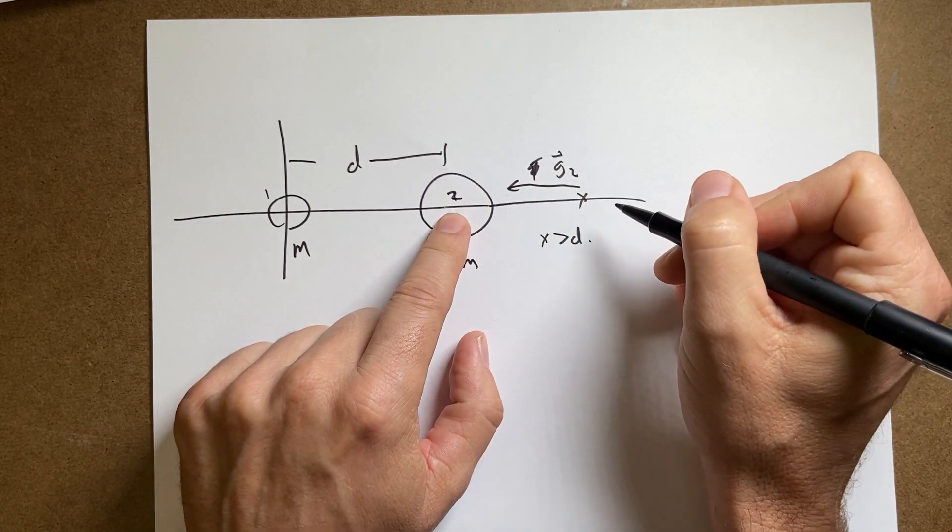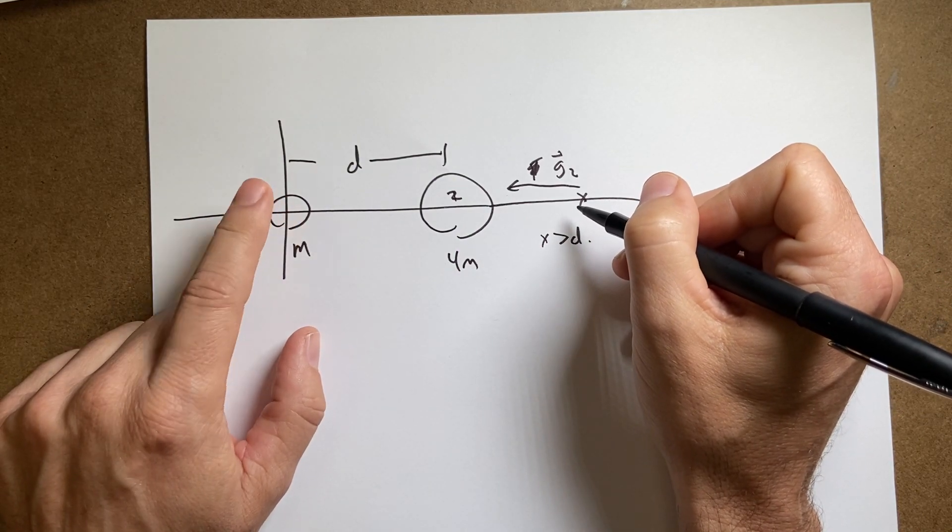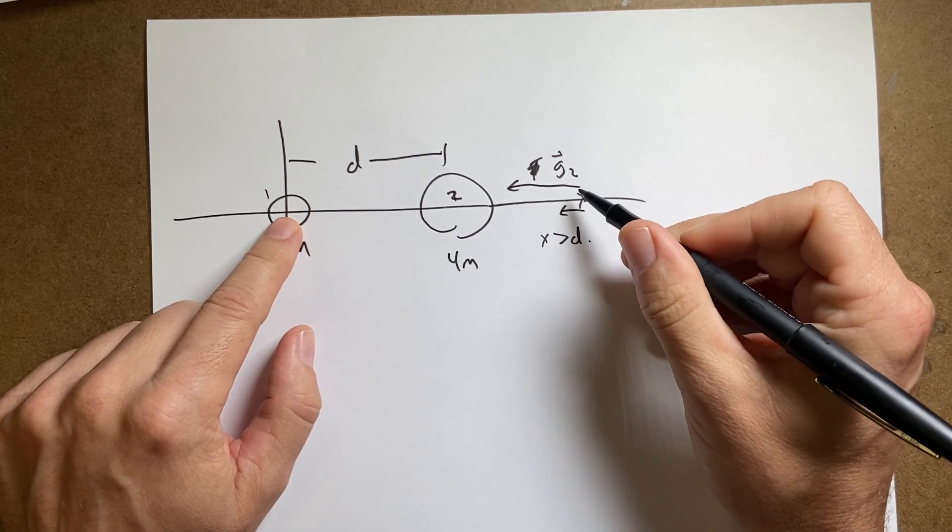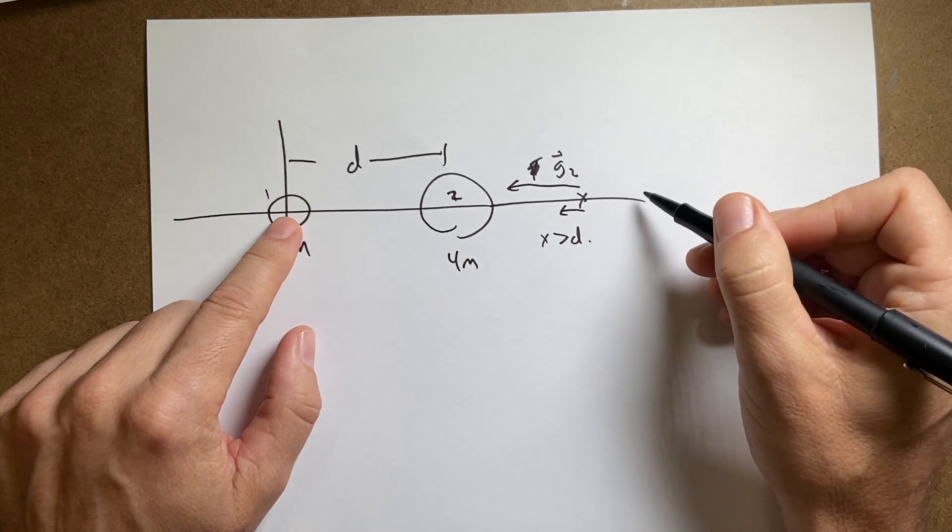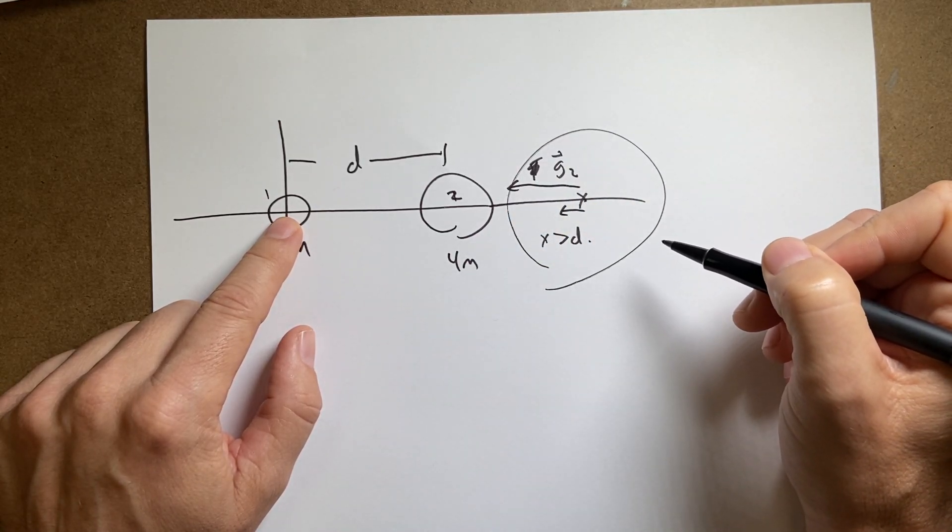That's the gravitational field. Now what about this one? This one's also going to pull to the left. But it's not going to be as big because the mass is smaller and it's further away. So it's going to be tiny. But the point is they're both in the negative x direction. So they can't cancel. There's no way this region could have a zero gravitational field.